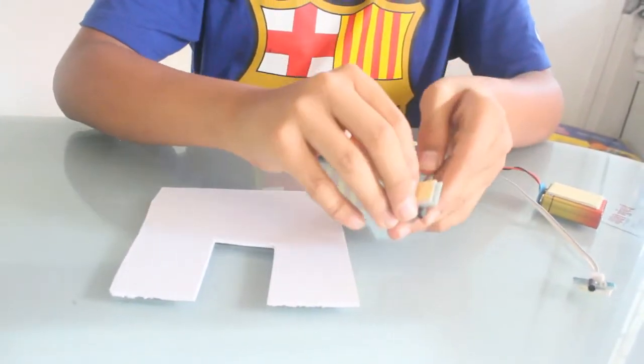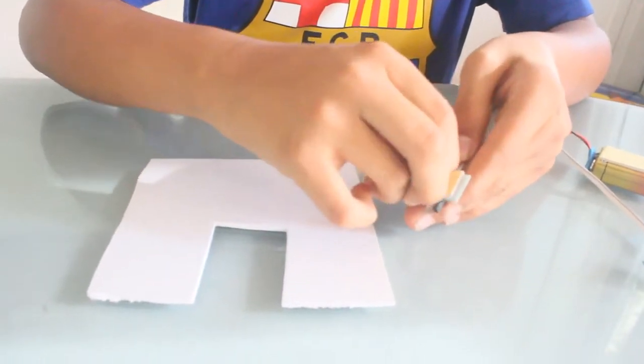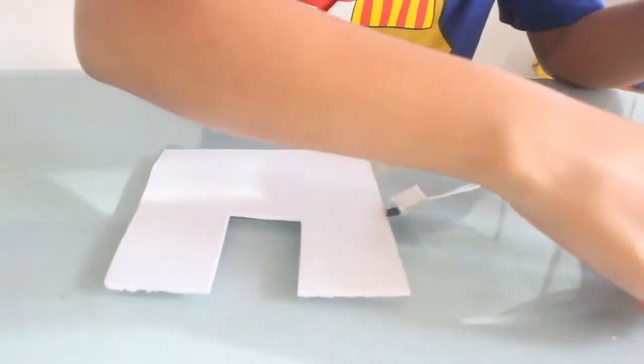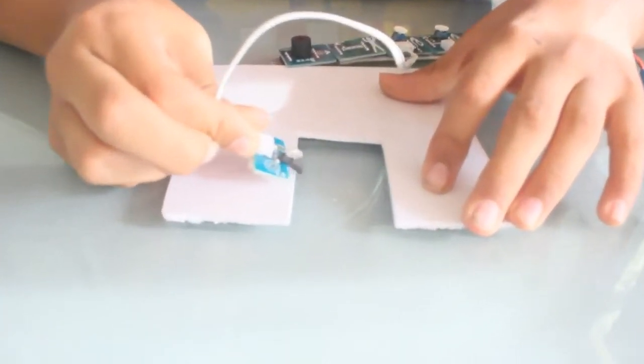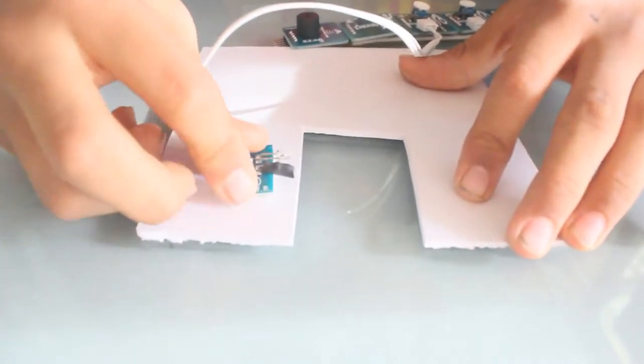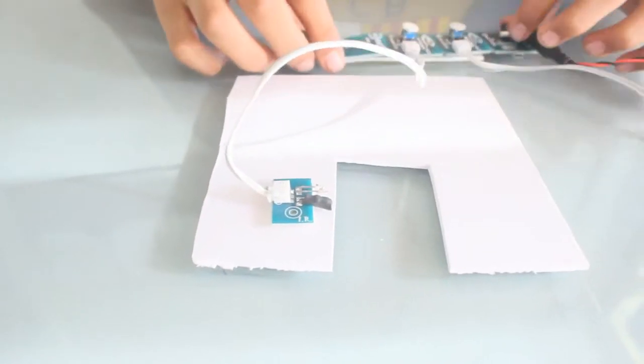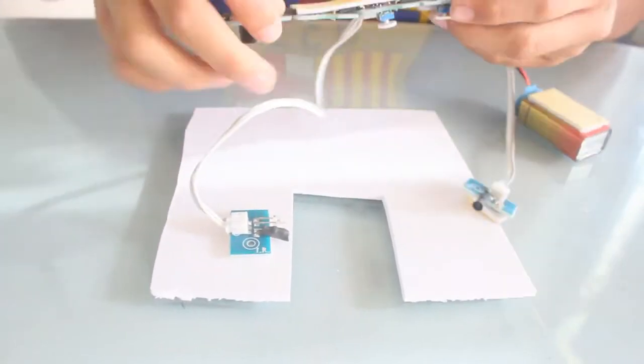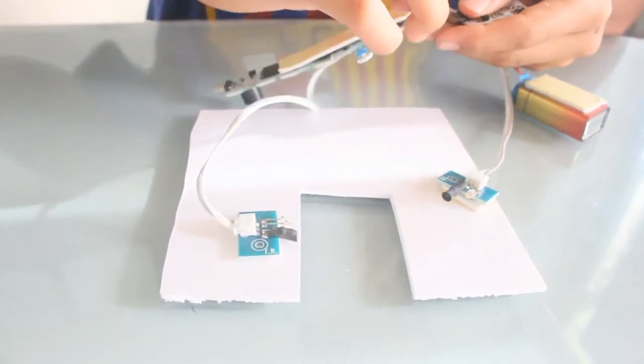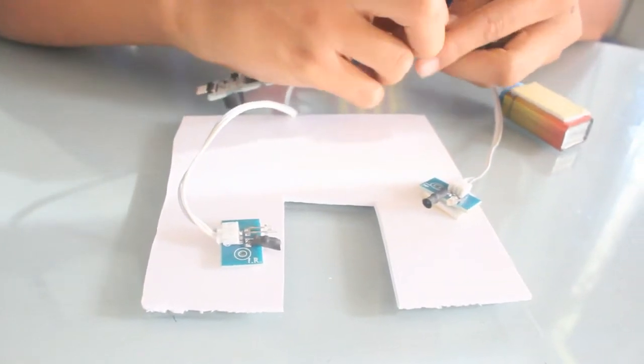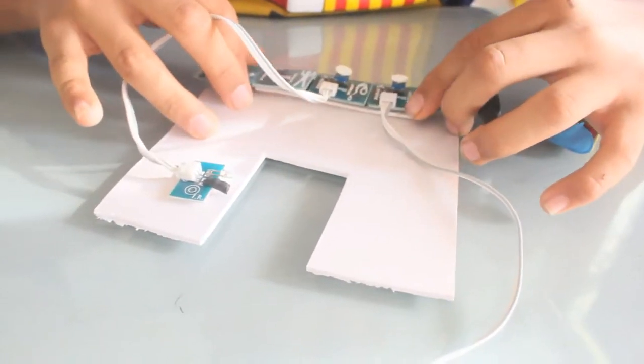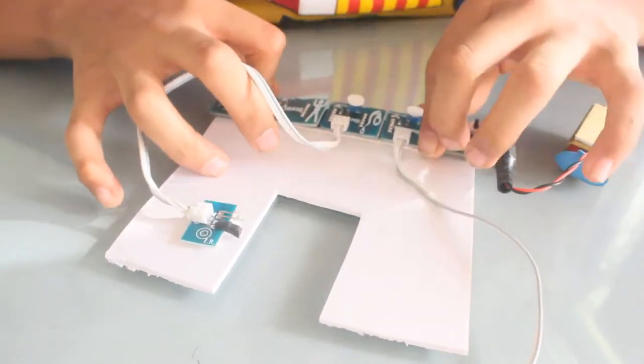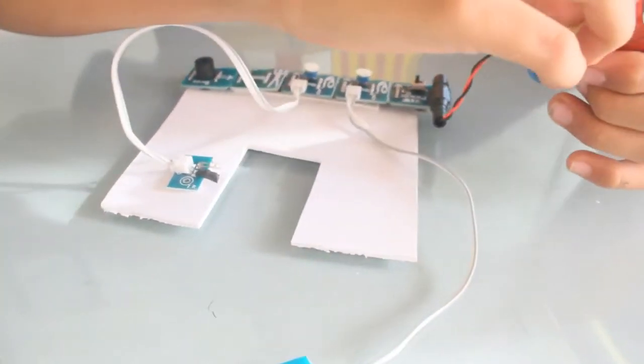First, just stick the infrared. Let's just remove this. Okay, for now, first just stick one. Now then stick your main circuit. Then stick your battery.